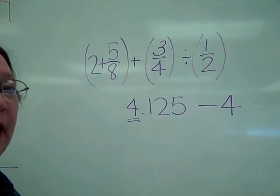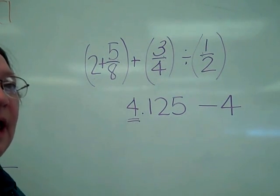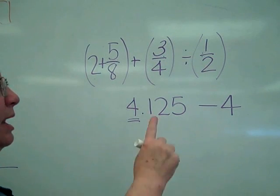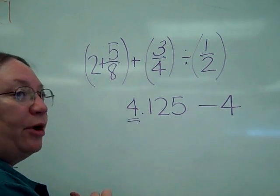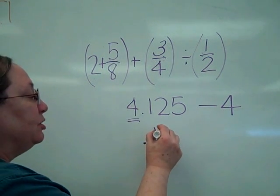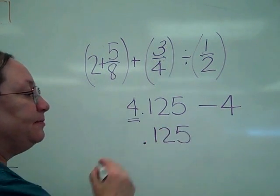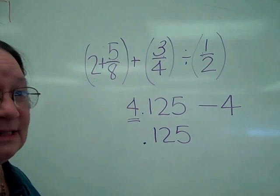Notice on your display, it's going to say answer, meaning that it took the answer from the previous problem, and it's going to subtract 4. Now on your display, your answer should be .125. That's a nice decimal, doesn't have a whole number in front of it.